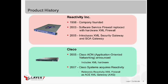There's an interesting history behind the ACE XML networking gateway. It originally came from a different company called Reactivity, founded in 1998. They predominantly provided software-based products up until about 2003 — several software-based service firewalls or XML gateways. In 2003, they introduced an appliance-based version of their software service firewall, which they renamed the XML firewall. That product went through a number of naming changes over time.